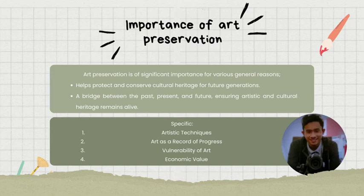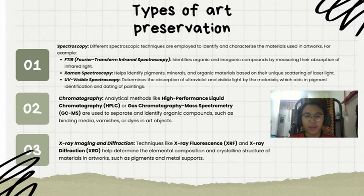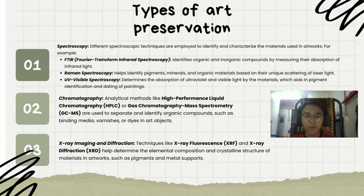There are eight types of art preservation. The first one is spectroscopy — different spectroscopic techniques are employed to identify and characterize the materials used in artwork. For example, Fourier Transform Infrared Spectroscopy identifies organic and inorganic compounds by measuring the absorption of infrared light. The second one is Raman spectroscopy, which helps identify pigments, minerals, and organic materials based on their unique scattering of laser light. The last one is UV-Visible spectroscopy, which determines the absorption of ultraviolet and visible light by the material.